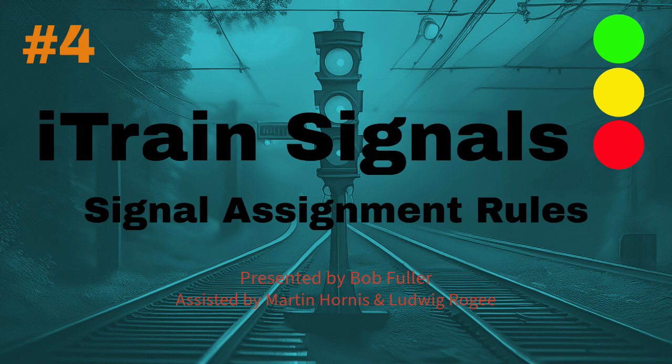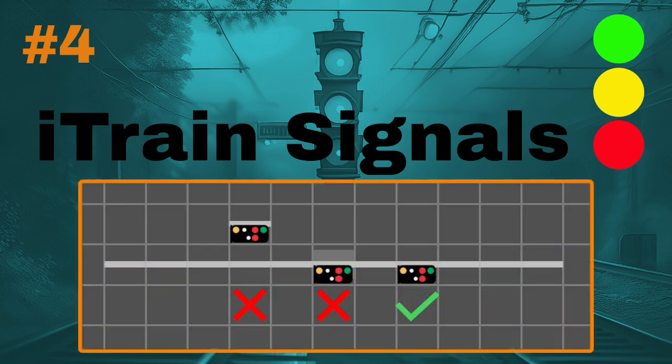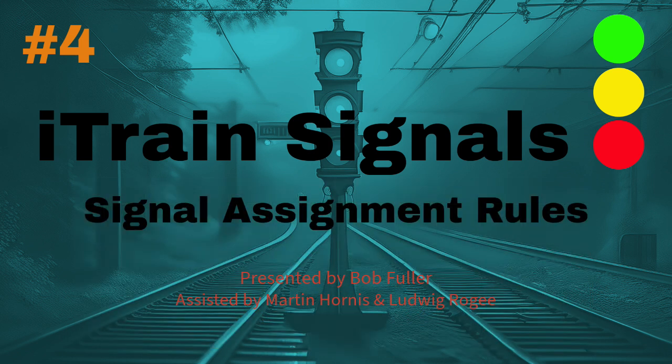But there are situations when the automatic assignment of the signal cannot be completed by iDrain, such as when a signal is not drawn in the switchboard track, or when a block is divided between two tabs on the switchboard, or when things just don't go as expected. So we also need to know how to assign the signals manually. In this episode we describe how.